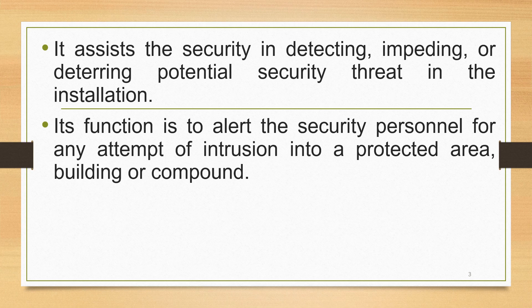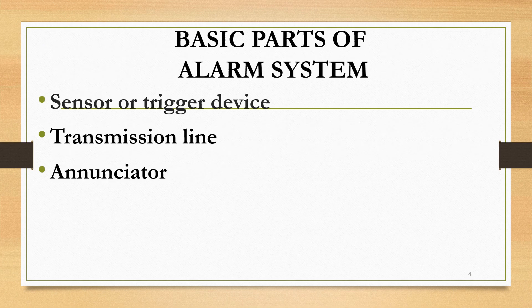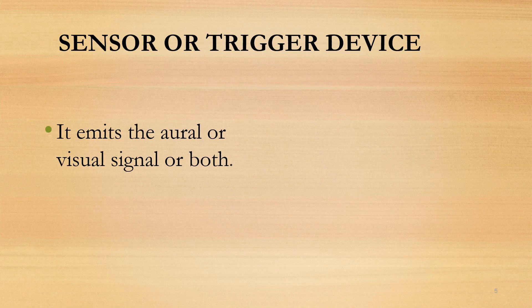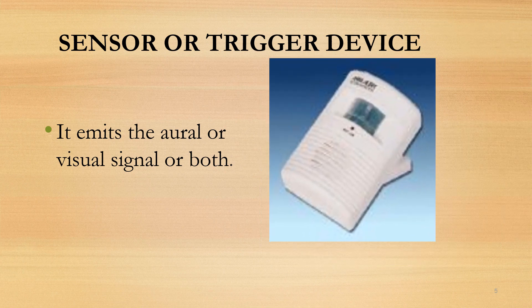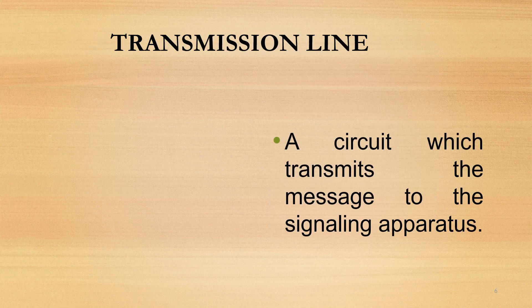There are three basic parts of an alarm system: one, sensor or trigger device; two, transmission line; and three, annunciator or enunciator. The sensor or trigger device emits both oral or visual signals. The transmission line is a circuit which transmits the message to the signaling apparatus.